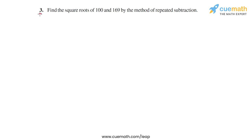In question 3 of this exercise, the problem statement says: find the square roots of 100 and 169 by the method of repeated subtraction.